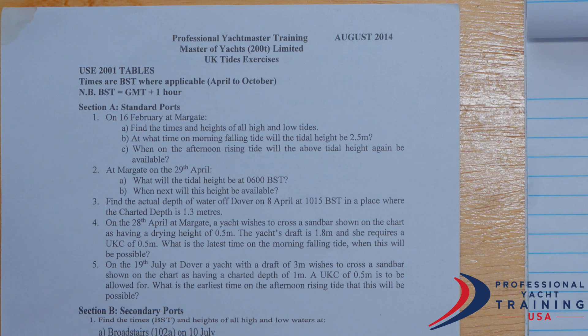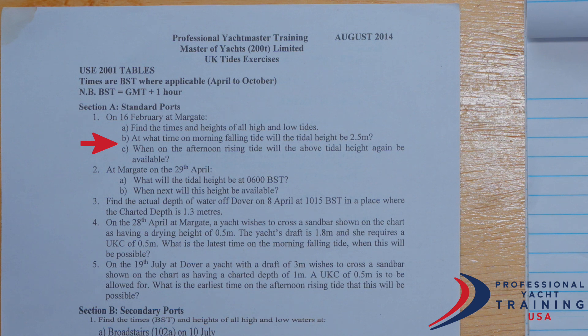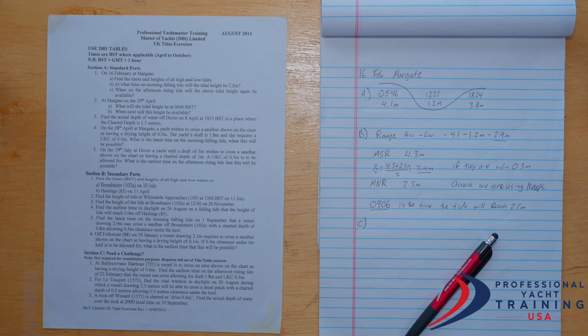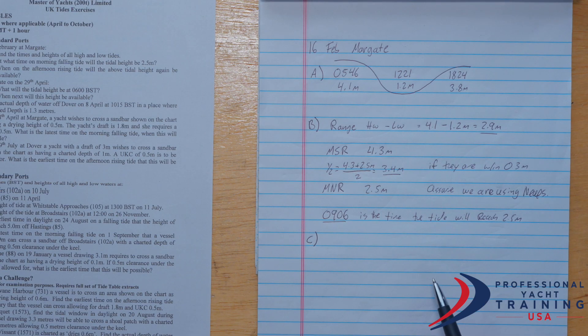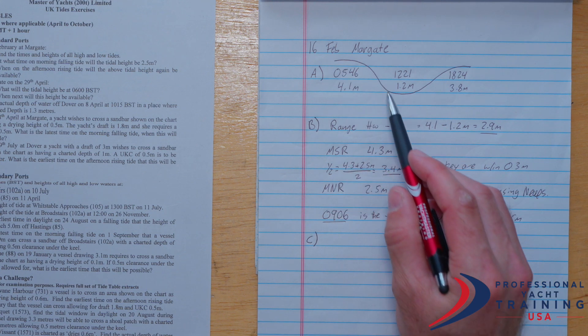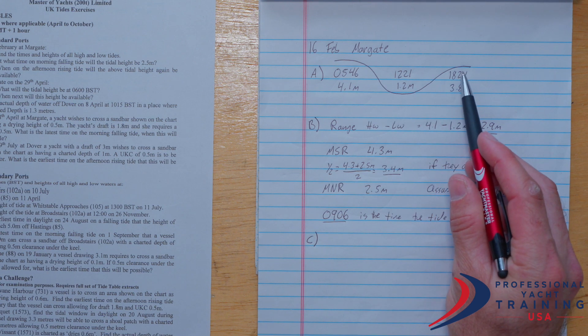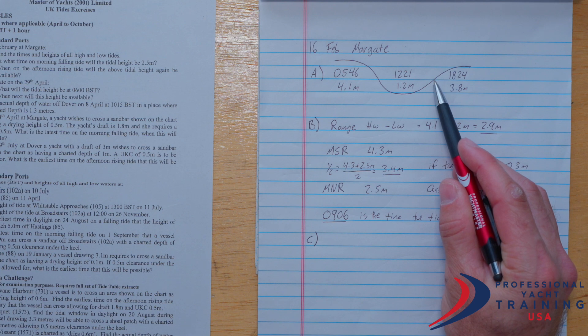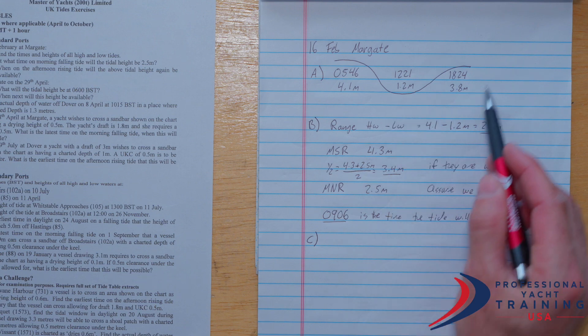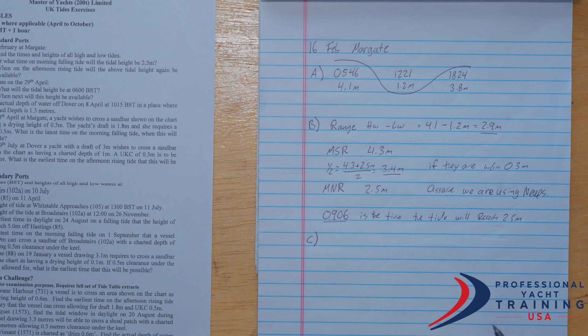So we've worked part B. Part C of problem number one asks, when on the afternoon rising tide will the above tidal height again be available? So one of the troubles with these problems is sometimes interpreting what they're asking. But if you look at your original data for February 16th in Margate, you'll note that there's a falling tide in the morning. And during that falling tide, we pass 2.5 meters. And then there's a rising tide in the afternoon. And somewhere during that rising tide, it's going to again pass 2.5 meters. So part C is just asking us to utilize the rest of the data and figure out when in the afternoon the tidal height is again 2.5 meters.